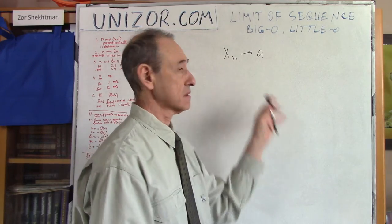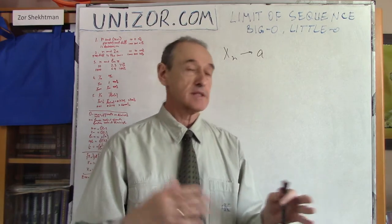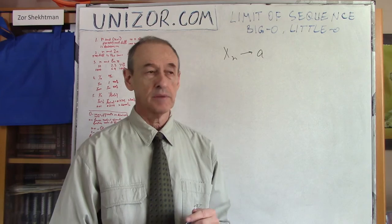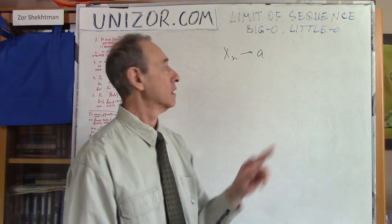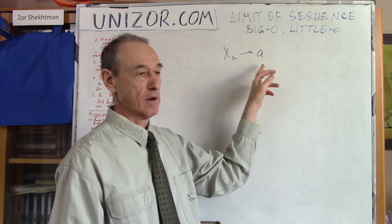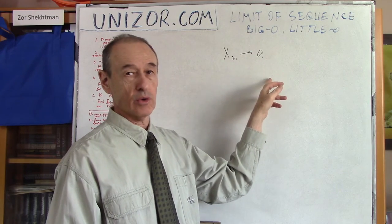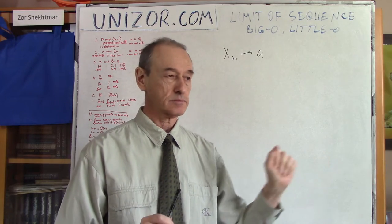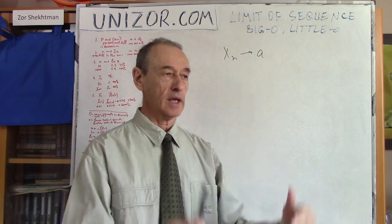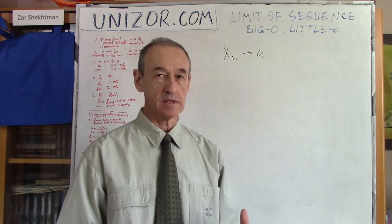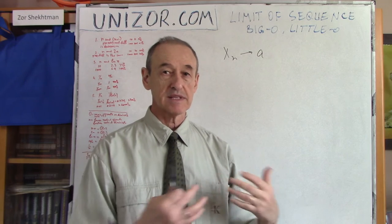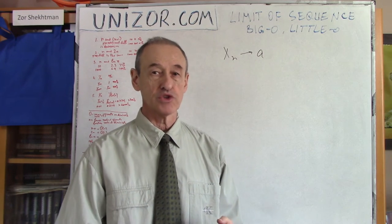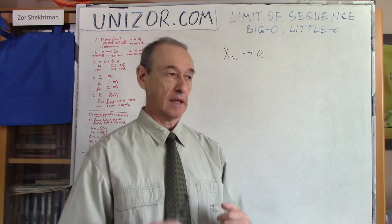So all the xn, at least starting from a certain n, are positive, and this limit a is either zero or positive infinity. Our purpose is to compare the speed of approaching that particular limit.